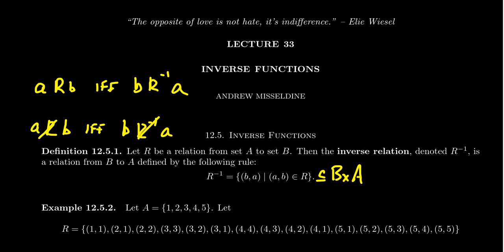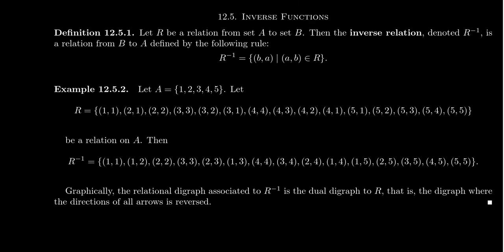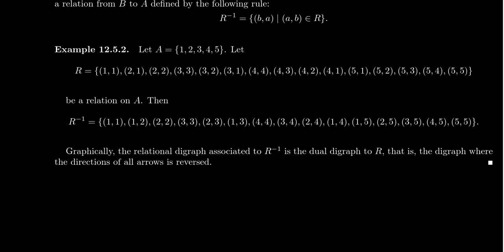It just switches those two things around — you swap the order. The order does matter with a relation. In the case where A equals B, a relation is symmetric if and only if it's equal to its inverse relation. With symmetric relations, we don't have to worry about the order. But in general, order does matter, and the inverse relation is just switching the order around. Let's see a quick example of this. It's a very simple concept, but let's see some examples.